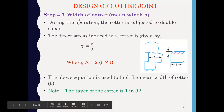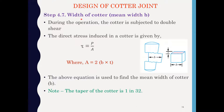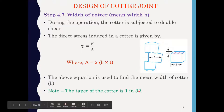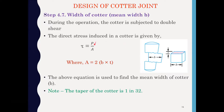Step 4.7: Calculate the mean width of the cotter. Since the cotter has a taper of 1 in 32, we calculate the width at the mean position. The cotter is subjected to double shear, and the shear area is B × T at one side, so at two sides it is 2 × B × T. Using the general formula tau = P / A, and putting A = 2 × B × T, we can find the width B of the cotter.